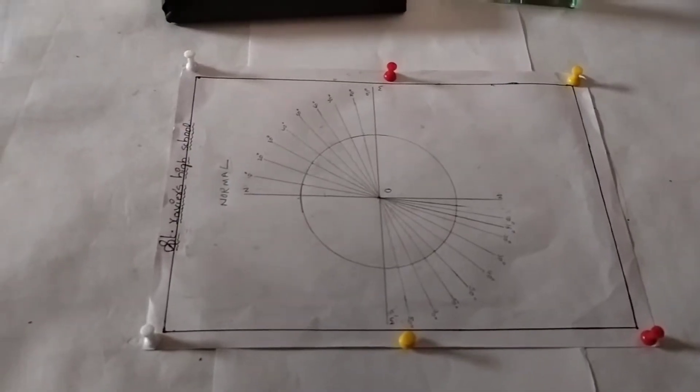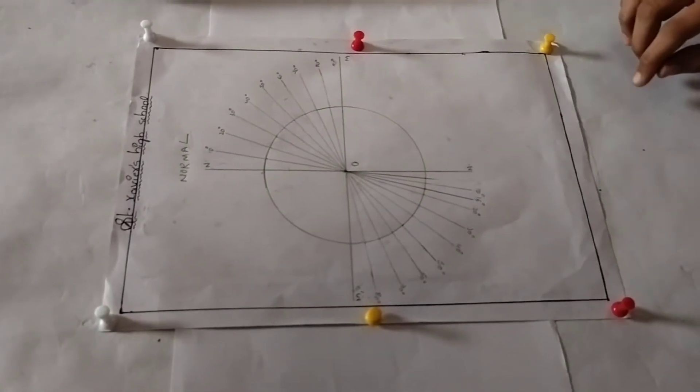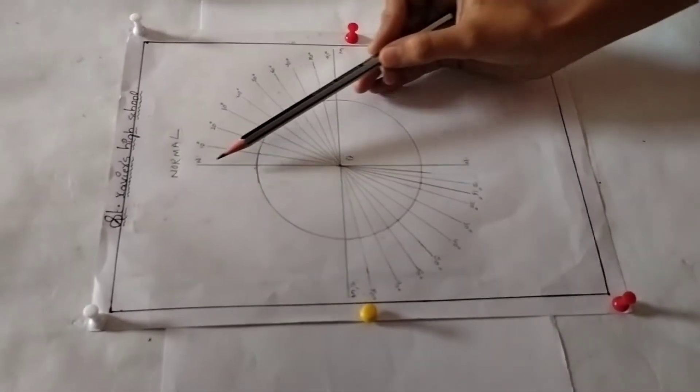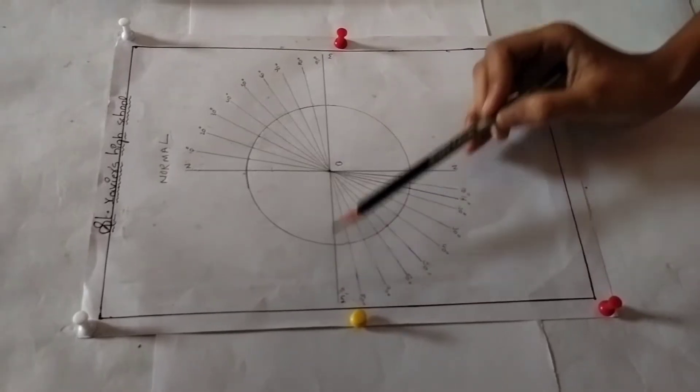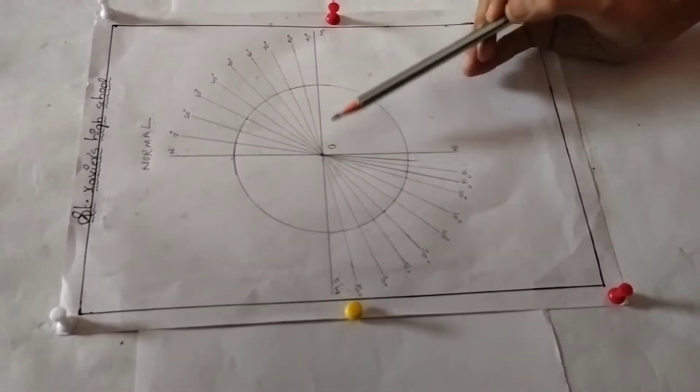Take a wooden plank which is covered with white chart. Draw two perpendicular lines passing through the middle of the paper as shown in the figure. Let the point of intersection be O.